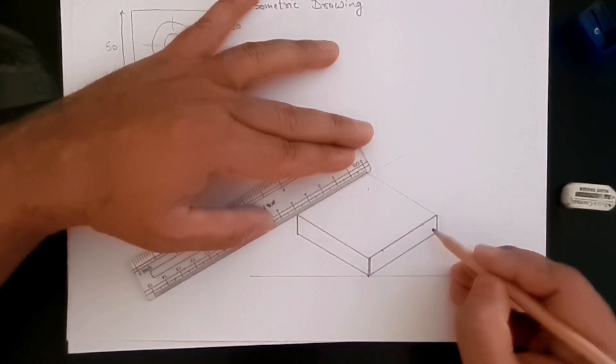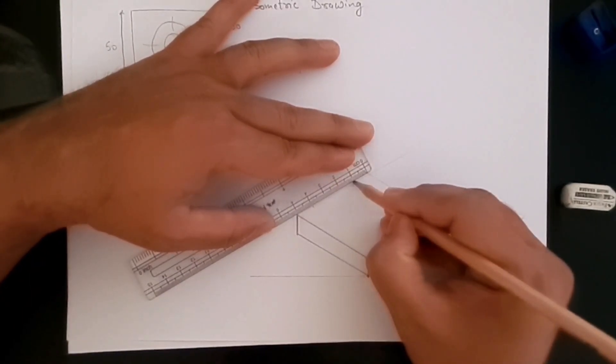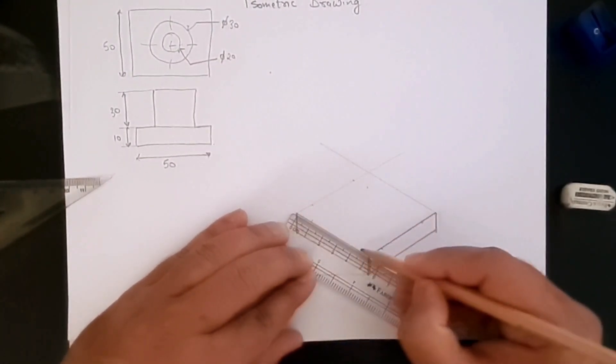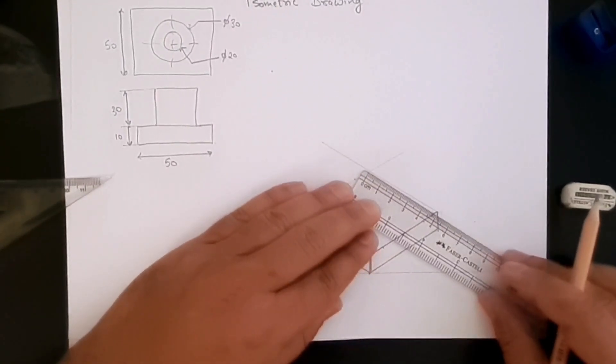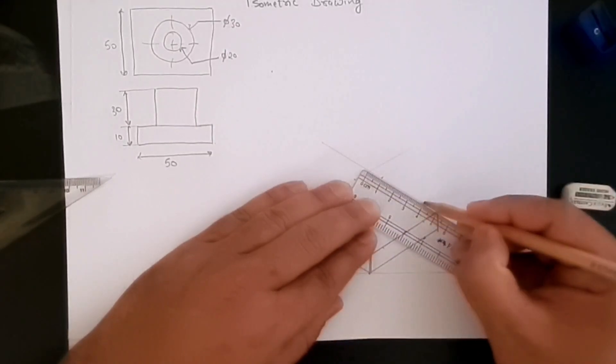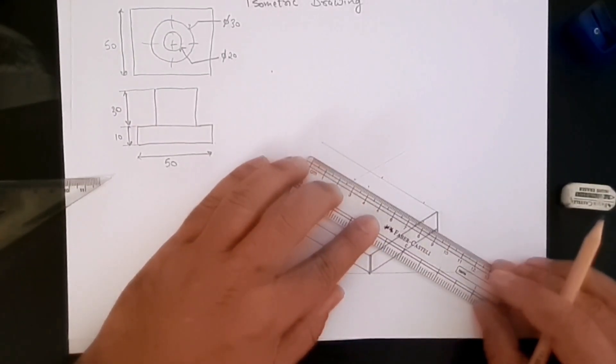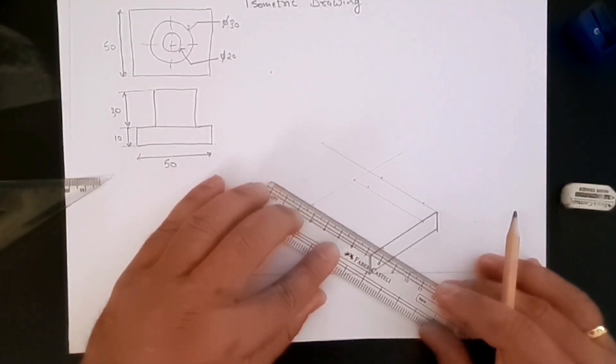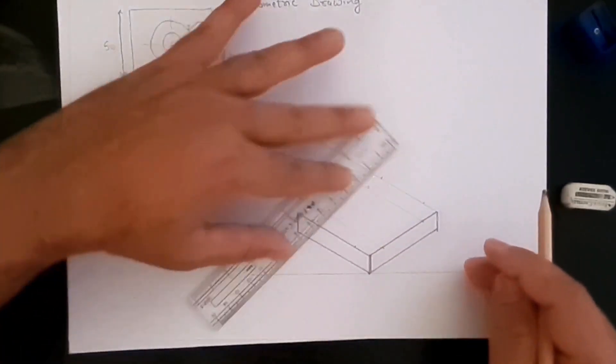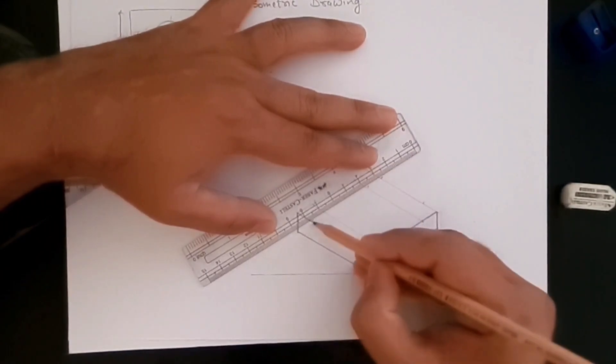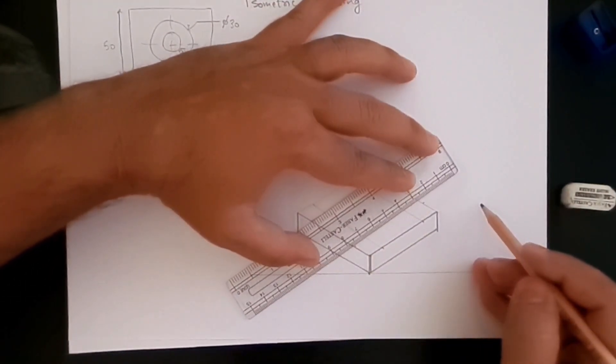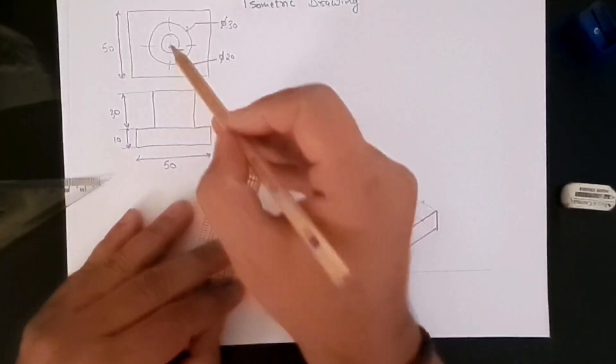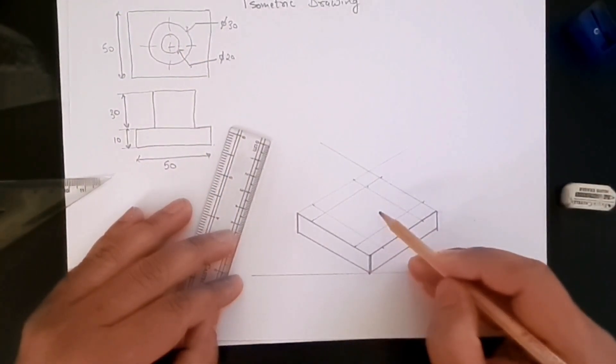Now here the diameter is 30, so we'll need to create a square here which is 30 millimeters. Now how do we create that square? Well, it's easy. 30 is, so if I do 15 centimeters from either side here. And here the same way, and here too. We'll get our square, so if I join these lines here.